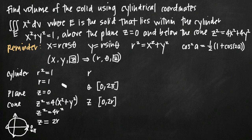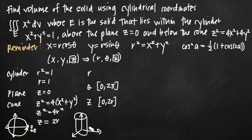What about the limits for r? We have r equals 1 as the outer boundary, but we also need an inner limit. The cylinder is centered at the origin, so r goes from the center at 0 out to the edge of the cylinder at 1. The minimum value for r is 0, and the maximum is 1. So our limits of integration for r are 0 to 1.